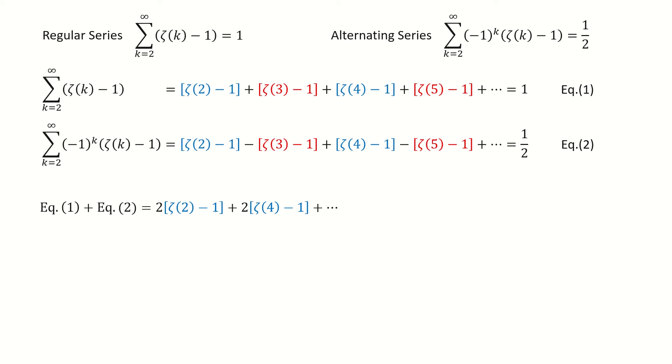Next, we add these two equations together, so all the red terms cancel out, and we're left with 2 times all the blue terms, and it equals 3 over 2. Then we divide 2 on both sides, so we got the answer for the even term series, which is equal to 3 over 4.